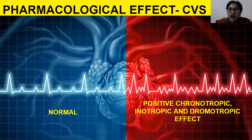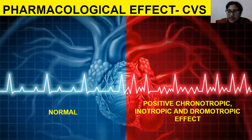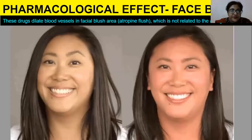Looking at the effect on the heart: the normal heartbeat is altered and, as soon as a person takes an anti-muscarinic drug, positive chronotropic, inotropic, and dromotropic effects are produced.